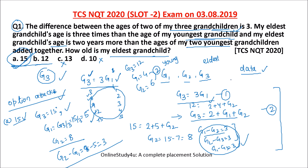You might say this took more than 5-6 minutes, but I have to teach each and everyone so they understand. I could have done this within a minute, but explaining the concept — recognizing multiples of 3, writing down all the data, and using the option attack method — does take time. But now you will be able to solve it easily.